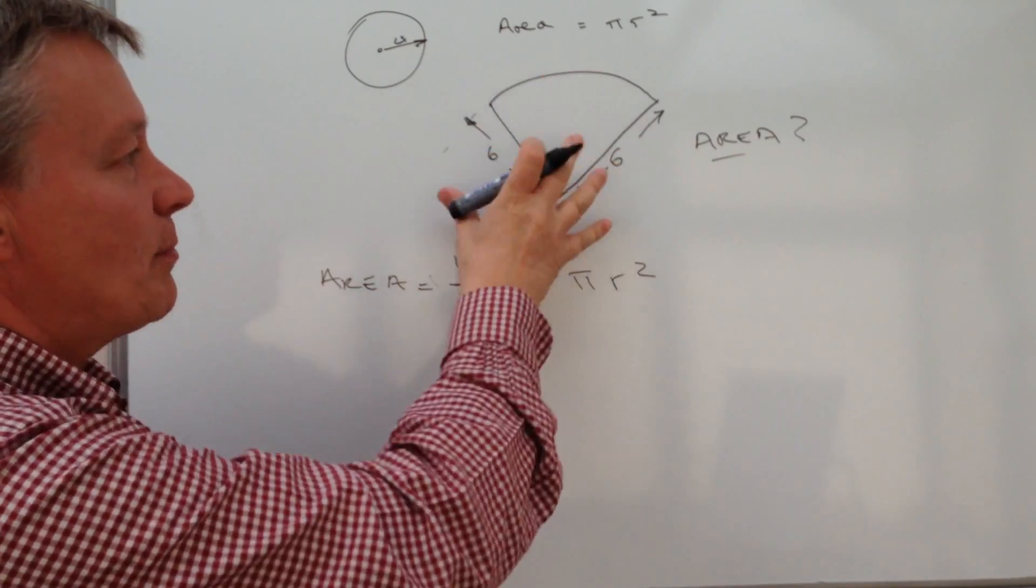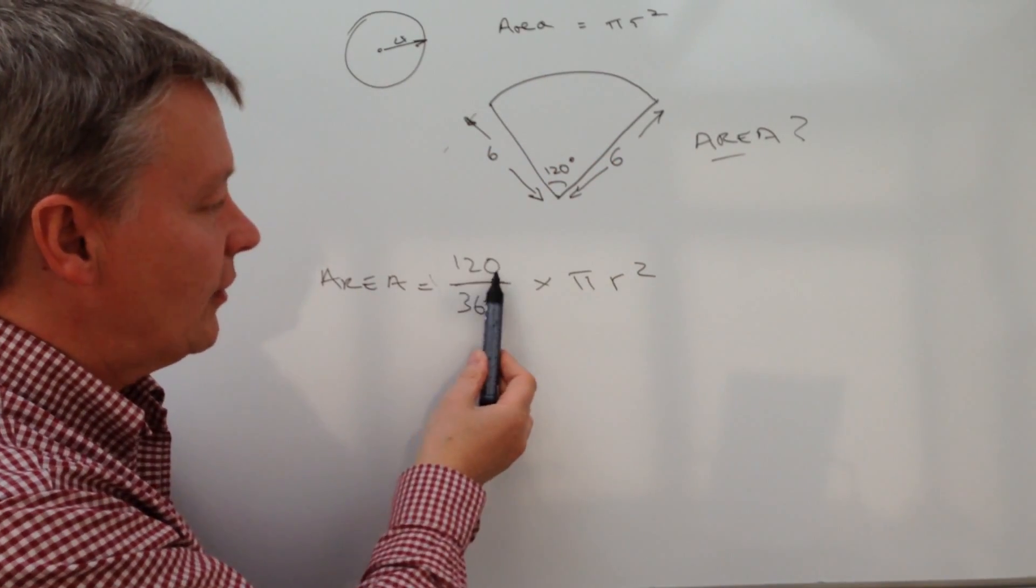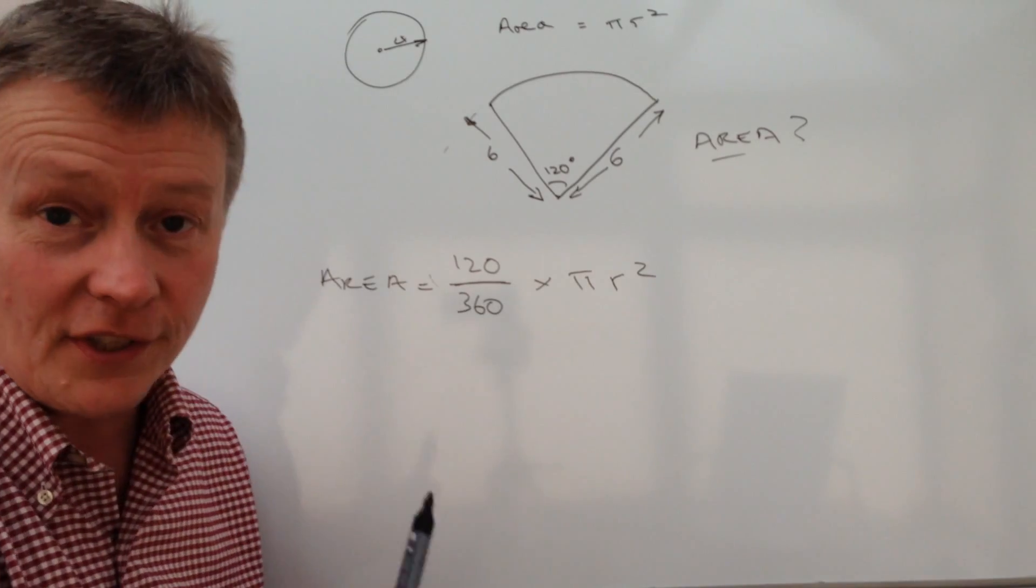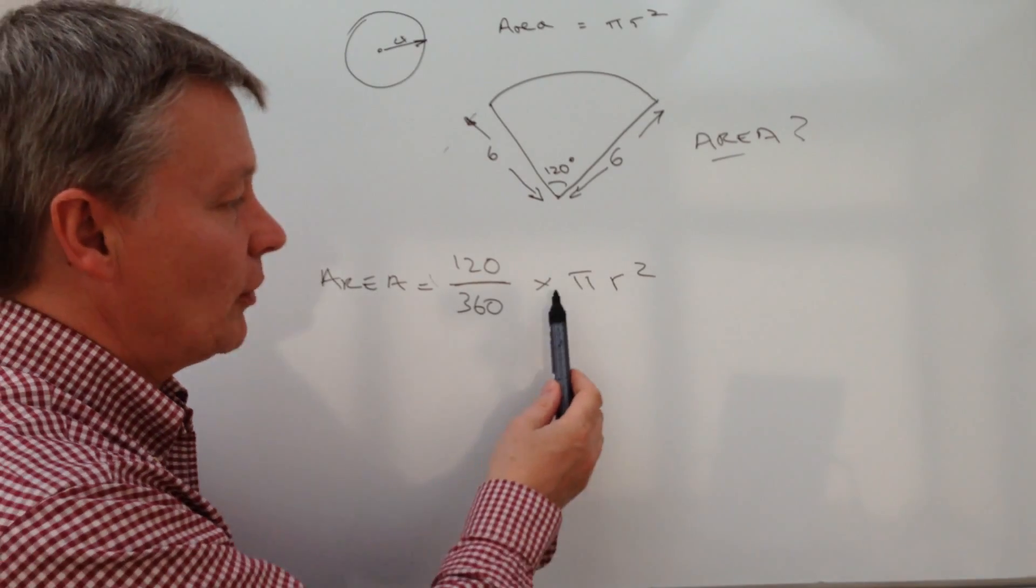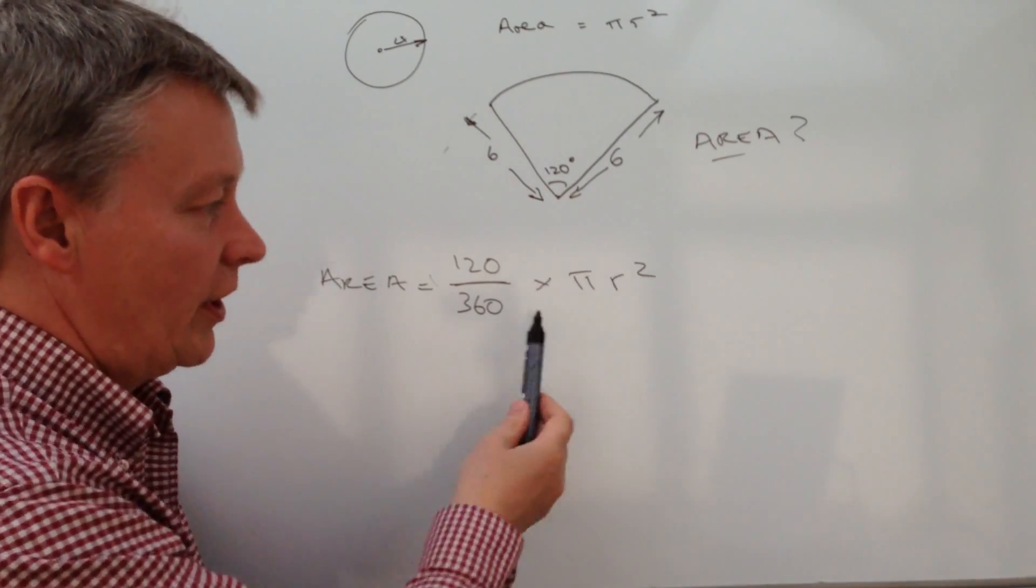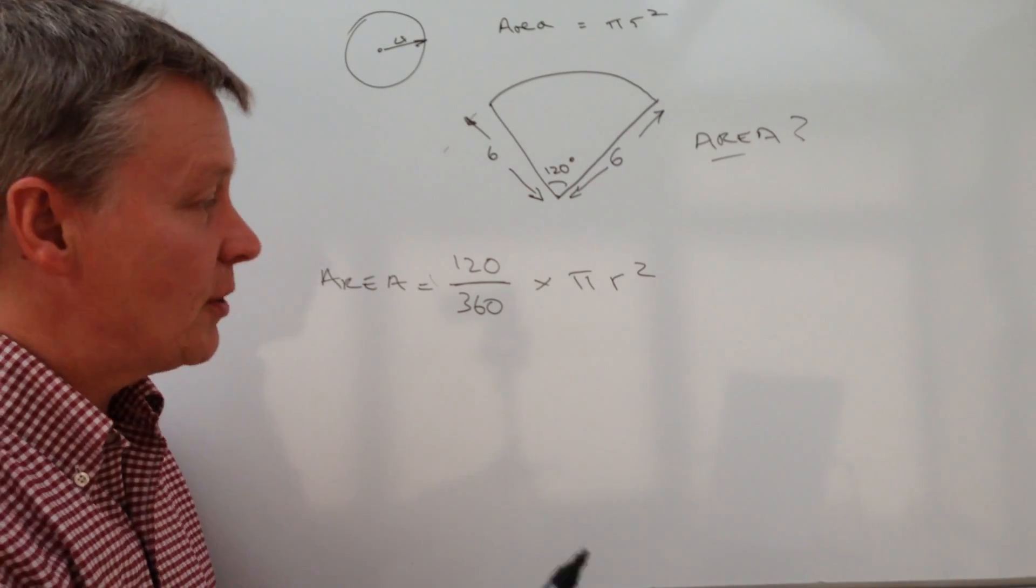So the overall area of this particular sector is 120 degrees out of 360 degrees. And we're going to multiply that by working out the area of a circle which is pi r squared.